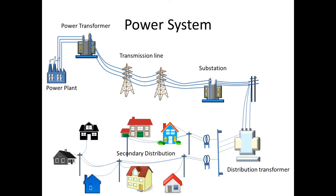Here the power is produced in the power plant and power is taken by the power transformer. In the power transformer the voltage level is stepped up to high kV and connected to the transmission line. This transmission line is given to the substation. From the substation the high voltage is stepped down to low voltage and is given to the distribution transformer. From the distribution transformer it is distributed to domestic usage by secondary distribution. In domestic, low level voltage is used.